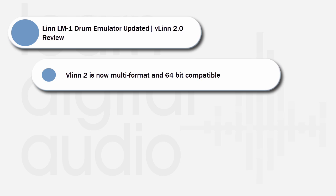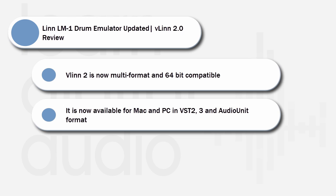The main and most important update is that it has been completely rewritten to be compatible with multiple plug-in formats and 64-bit systems. It is now available for Mac and PC in VST 2, 3, and Audio Unit format. VLen 2 is now written in Oli Larkin's respected iPlug framework. Version 1 was made in SynthEdit with added custom code, a lot like Variety of Sound's free plug-ins.